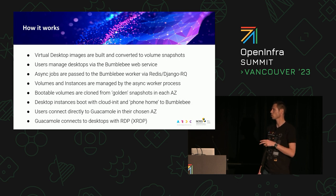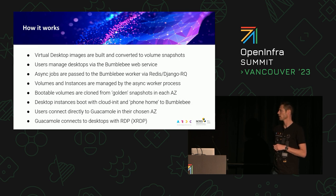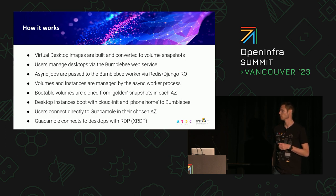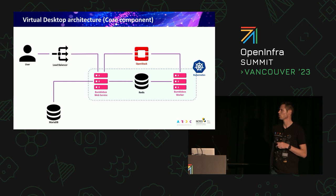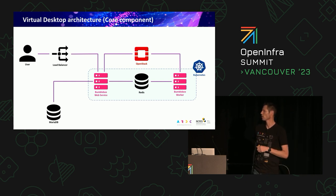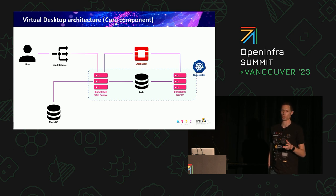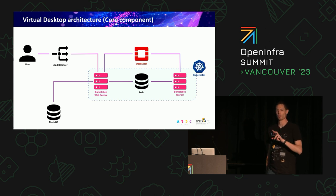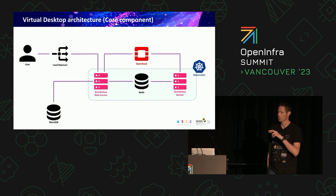Guacamole connects to the desktops and uses RDP on the back end. We found RDP provided by XRDP on the instance gives really good performance and allows some neat things like audio support, which is not all that common in virtual desktop services. The user connects through a load balancer to the main web service, which uses MariaDB for back-end storage and links to Redis, which connects to the Bumblebee worker for asynchronous jobs. We run it in Kubernetes and have a Helm chart for the Bumblebee components.